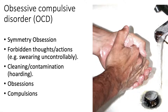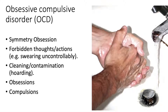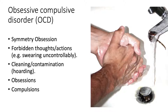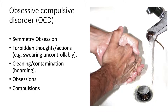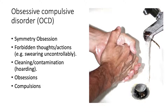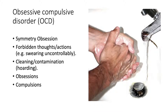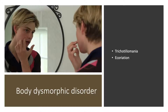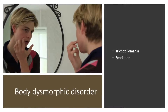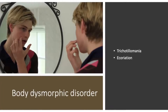Obsessive compulsive disorder is brought about by hopelessness, which drives individuals to perform persistent rituals. There are four types of OCD: symmetry obsession, which is wanting perfect order; forbidden thoughts or actions, like swearing uncontrollably; and cleaning or contamination and hoarding. Obsessions are defined as intrusive, nonsensical thoughts, images, or urges that individuals try to resist. Compulsions are thoughts or actions used to suppress obsessions and provide relief. Body dysmorphic disorder is centered on imagined defects in appearance by someone who looks normal but suffers from an imagined ugliness, which may contribute to conditions like anorexia.